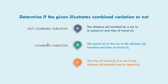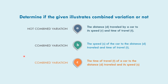Example c: the time of travel t of a car depends on the distance d traveled and its speed s. The formula is t equals d over s. So, this is also considered combined variation.